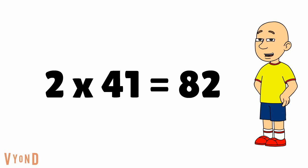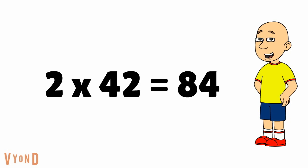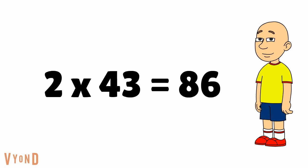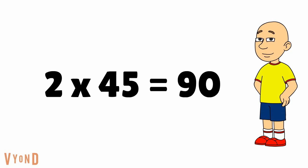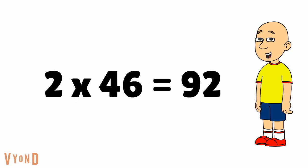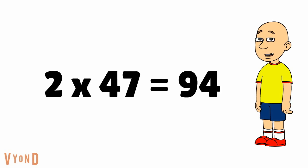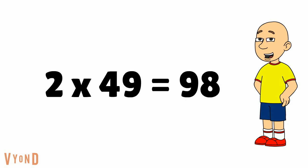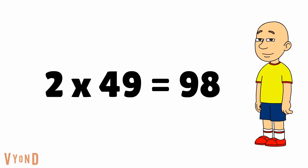2 times 41 equals 82. 2 times 42 equals 84. 2 times 43 equals 86. 2 times 44 equals 88. 2 times 45 equals 90. 2 times 46 equals 92. 2 times 47 equals 94. 2 times 48 equals 96. 2 times 49 equals 98. And 2 times 50 equals 100.